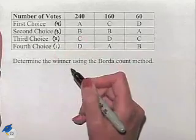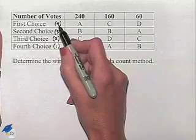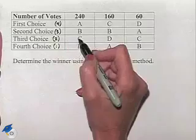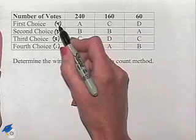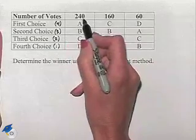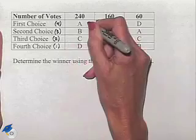We now determine our point totals by multiplying the number of points times the number of votes in each column, so we're going to begin by multiplying four times 240 to give us 960.